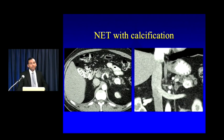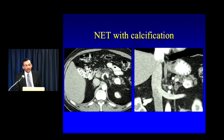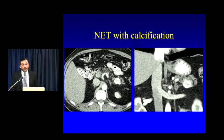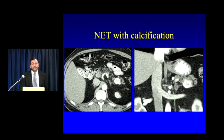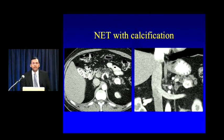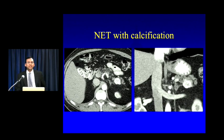If you see a calcified pancreatic mass, you are not dealing with an adenocarcinoma — period. This virtually never happens in the absence of treatment. On the other hand, calcification is quite common with neuroendocrine tumors. These calcifications can be very diffuse, as in this case, or stippled and involving just part of the lesion. Any time you see a calcified solid pancreatic mass, you have to think about a neuroendocrine tumor.